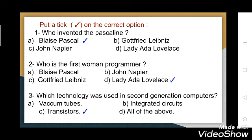The first exercise is: put a tick on the correct option. The first question is: who invented the Pascaline? The Pascaline was an arithmetic calculator developed in the 17th century. The options are: A) Blaise Pascal, B) Gottfried Leibniz, C) John Napier, D) Lady Ada Lovelace. The answer is Blaise Pascal.